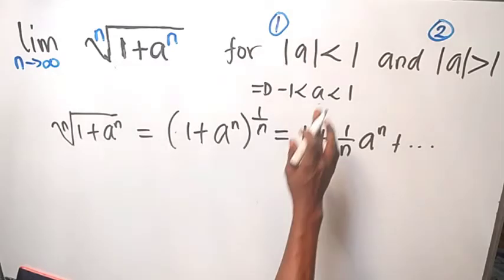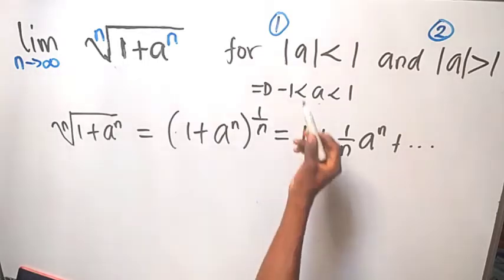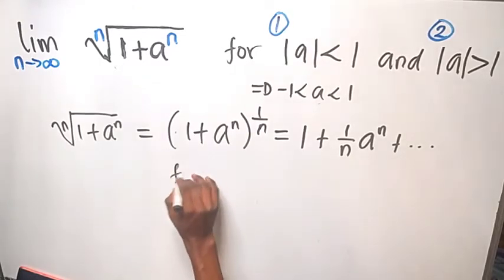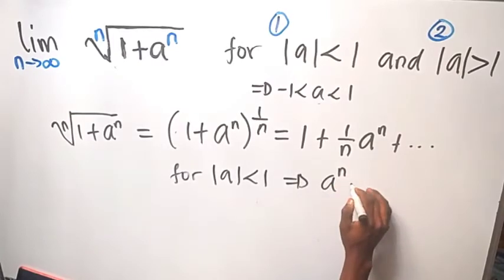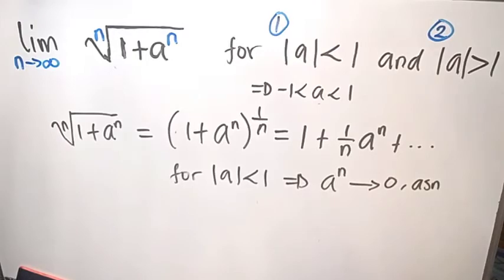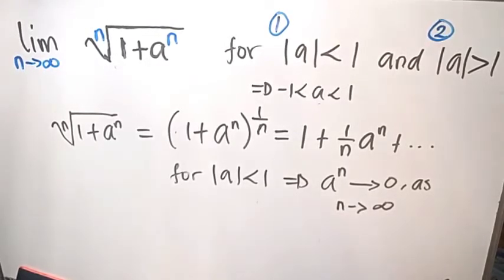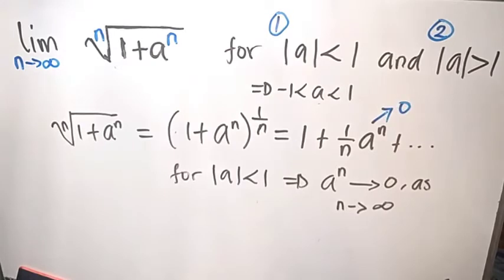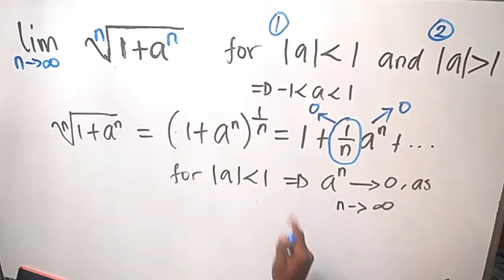Using that, for the absolute value of a to be less than 1, it means that a lies between negative 1 and 1. If you pick a value in this interval and raise it to some power n, where the power is very large, the value will approach 0. That is to say, for the absolute value of a less than 1, it implies that a raised to the power of n tends to 0 as n tends to infinity. So we are going to use that here — as n tends to infinity, the term a^n will tend to 0, and the whole expression will also turn to 0. That means we are just having 1 plus 0.